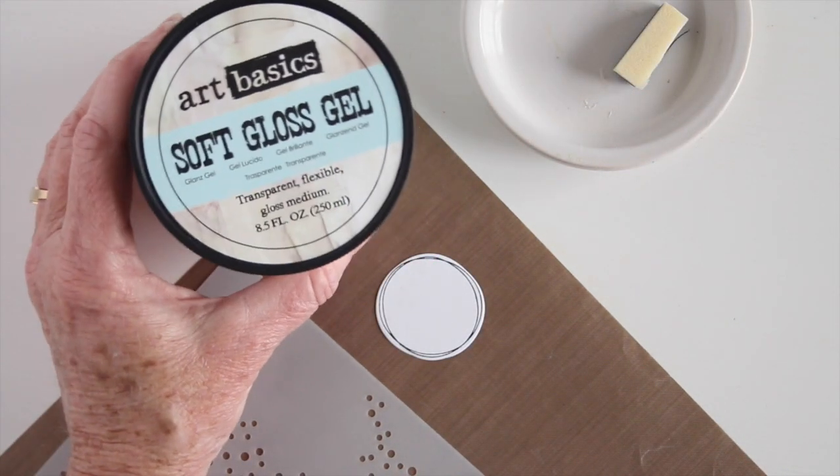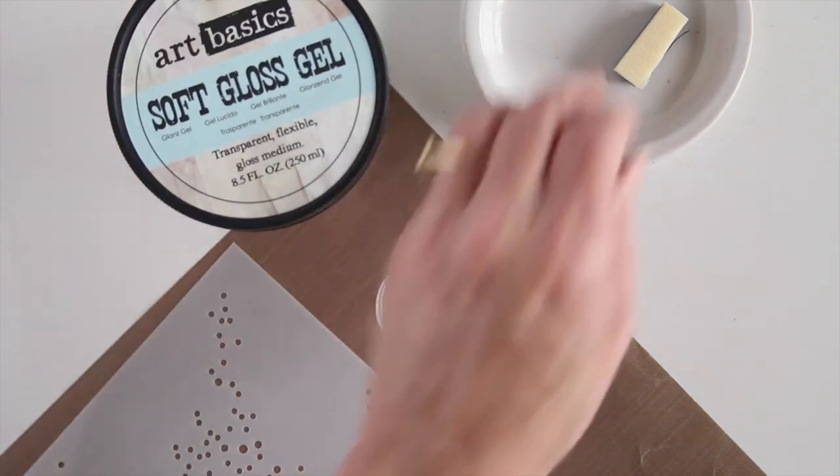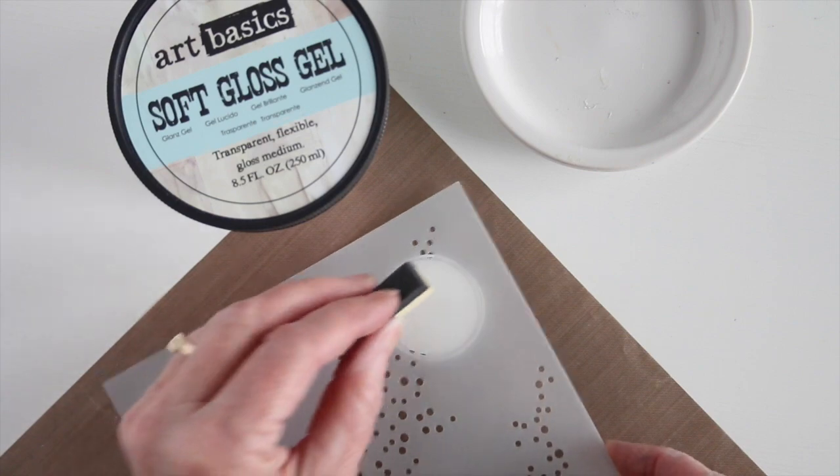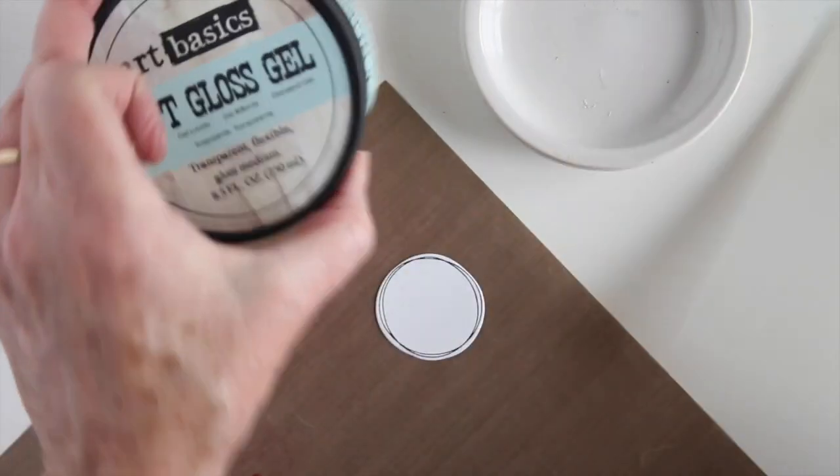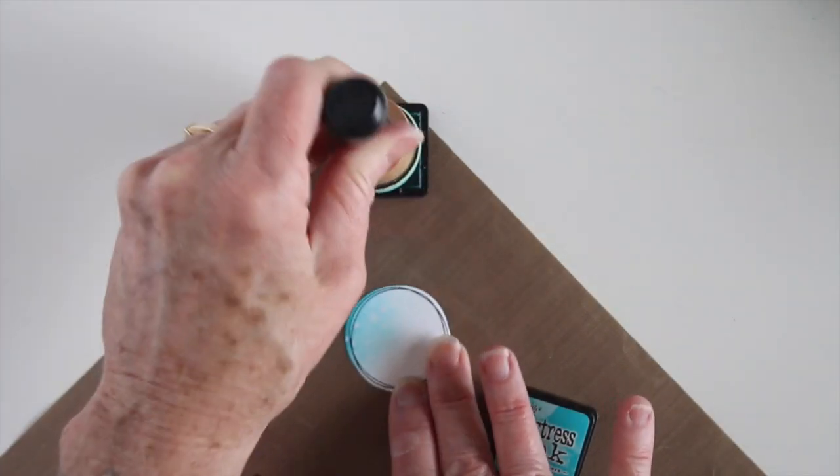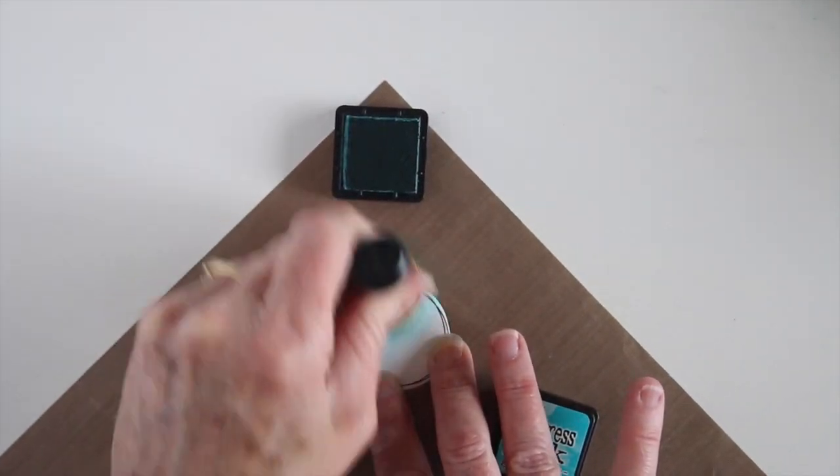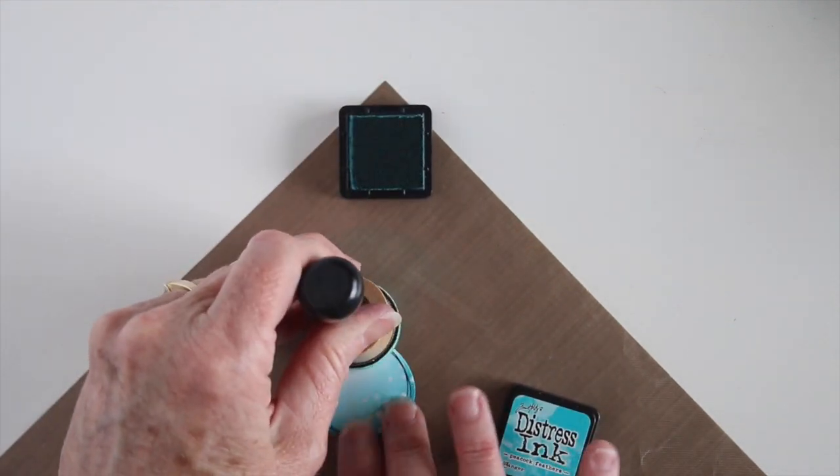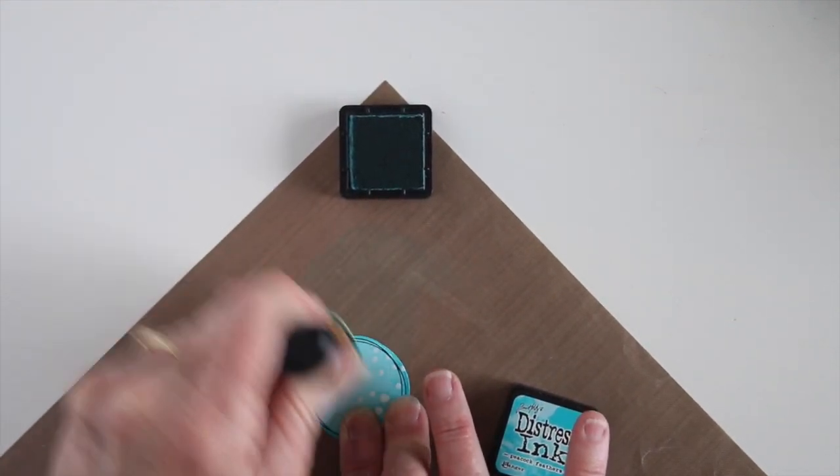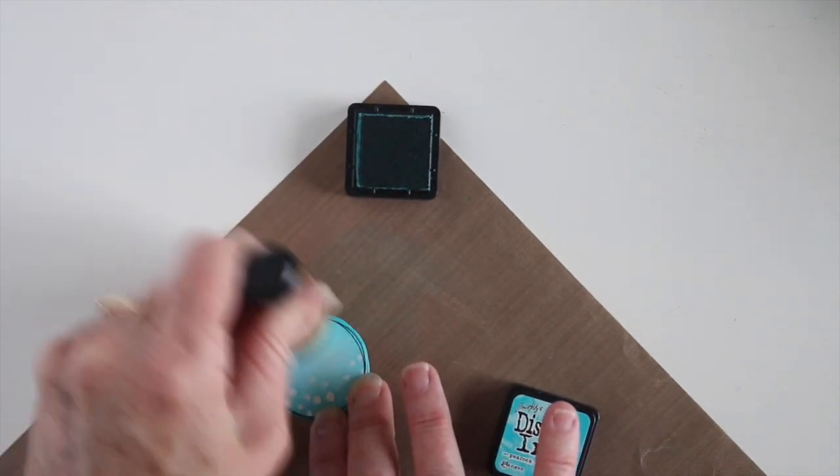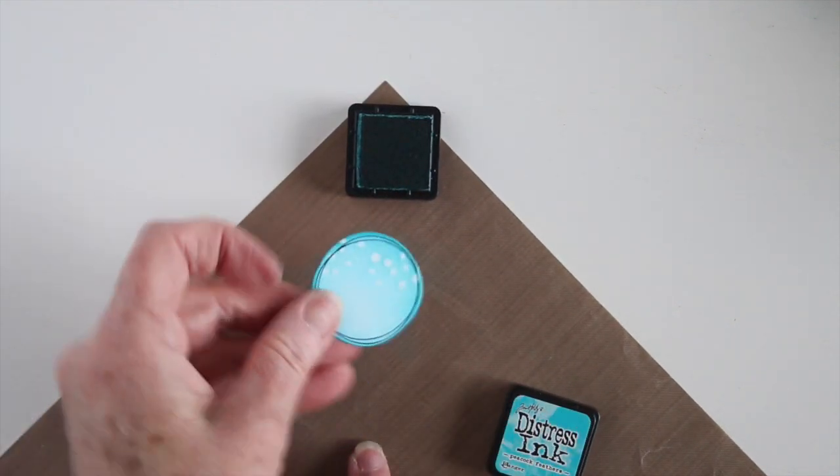Matte mediums and glossy mediums also work well as a resist. Again I've used my cut and dry foam on my saucer and through my stencil and I've allowed this to dry completely. My gel medium once it's set up it acts as a plastic on top of the paper and you can see that this is resisting really quickly. And again it's super fun for me to be able to use my stencils in this way. It's something a little bit different than the norm.